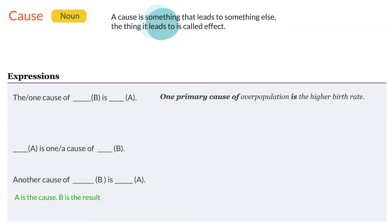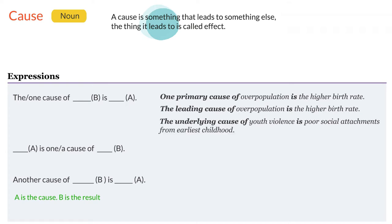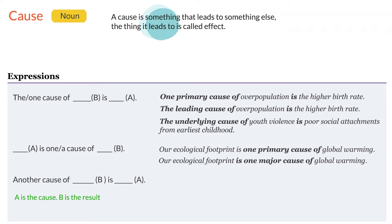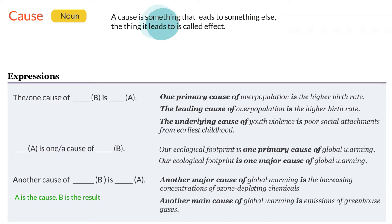One primary cause of overpopulation is the higher birth rate. The leading cause of overpopulation is the higher birth rate. The underlying cause of youth violence is poor social attachments from earliest childhood. Our ecological footprint is one primary cause of global warming. Our ecological footprint is one major cause of global warming. Another major cause of global warming is the increasing concentrations of ozone depleting chemicals. Another main cause of global warming is emissions of greenhouse gases.